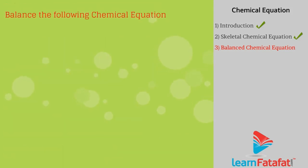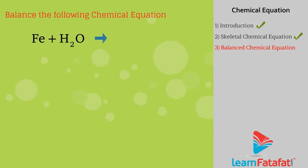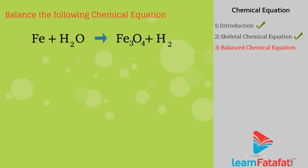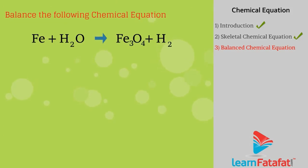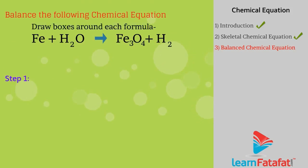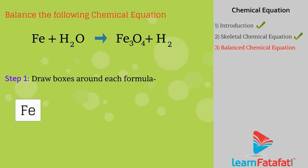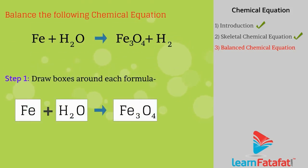Balance the following chemical equation: Fe + H2O → Fe3O4 + H2. Step 1: Draw boxes around each formula. Step 2: List the number of atoms of different elements present in the unbalanced equation.